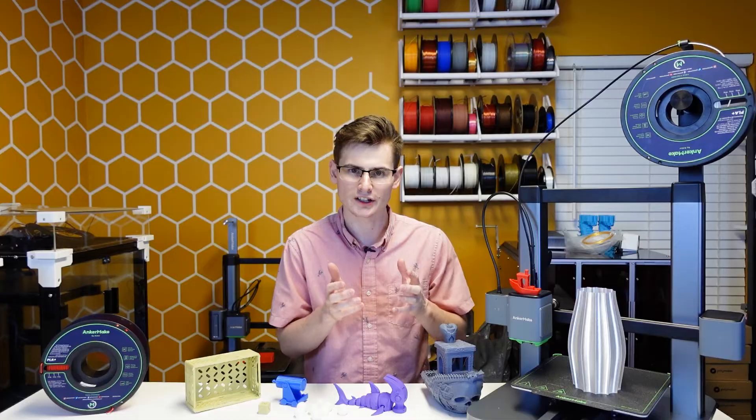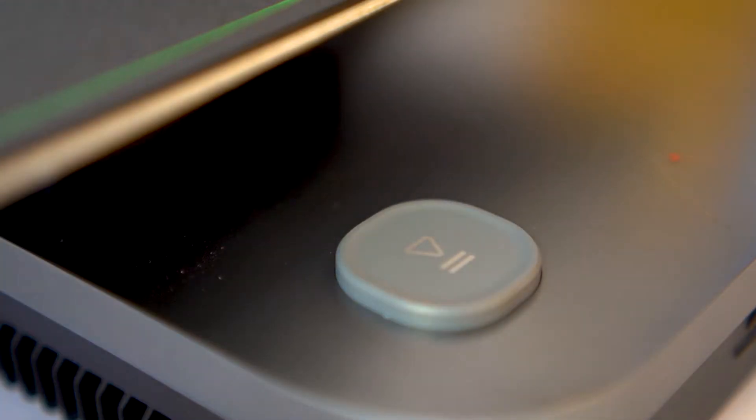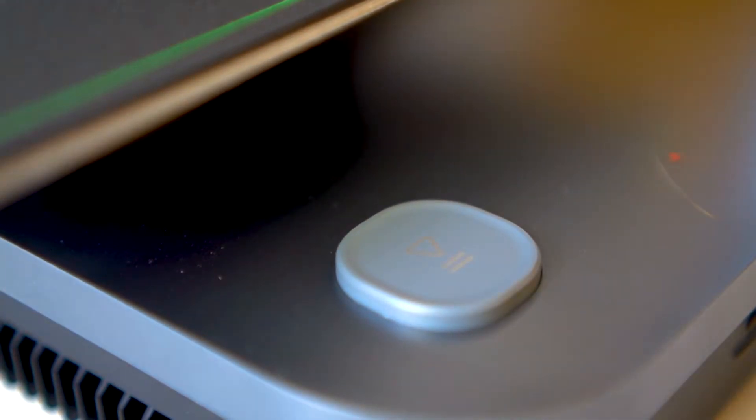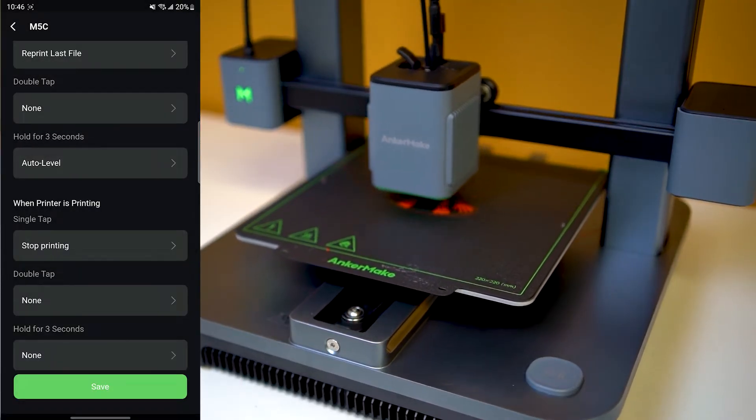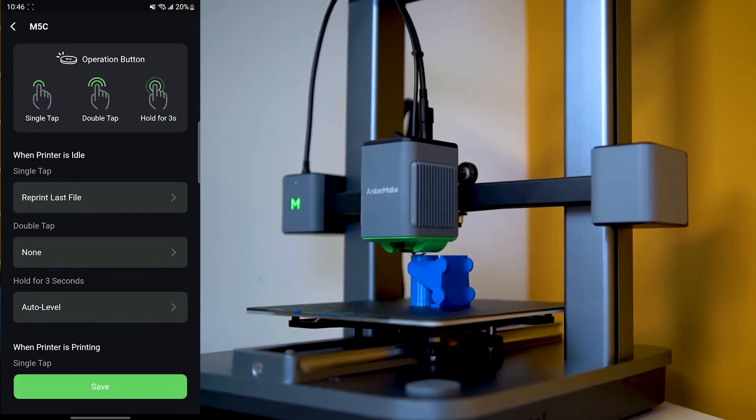The app is also used to customize the function of the big button on the front of the printer. You can set single press, double press, and long press functionality, either during printing or while idle. Some of the better options for the functionality of that button are pause and resume a print, printing from the previous file, and initiating an auto bed leveling process.